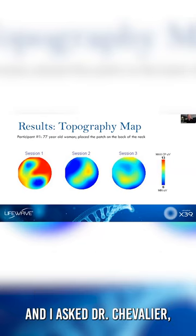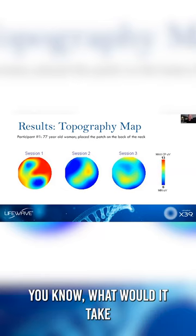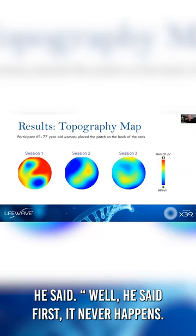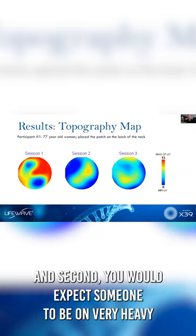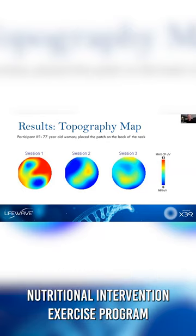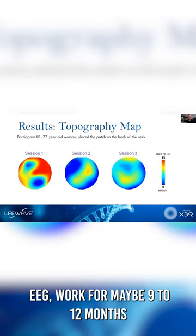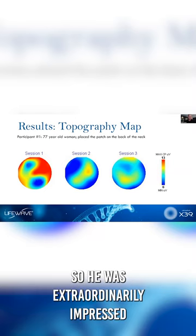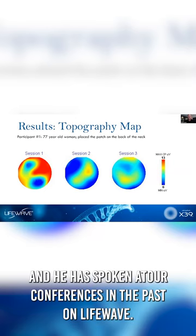And I asked Dr. Chevalier, what would it take to see this type of transformation outside of X39? And he said, oh, well, first, it never happens. And second, you would expect someone to be on very heavy nutritional intervention, exercise program, EEG work for maybe nine to 12 months to see anything even remotely close to this. So he was extraordinarily impressed. And he has spoken at our conferences in the past on LifeWave.